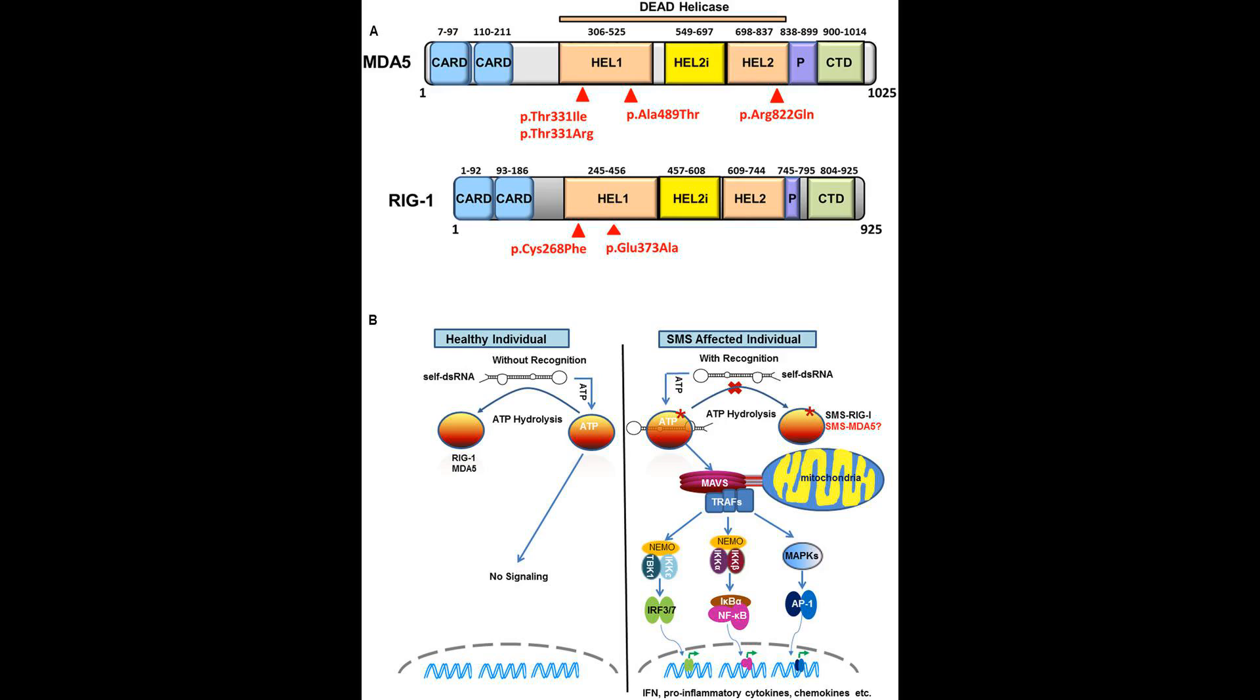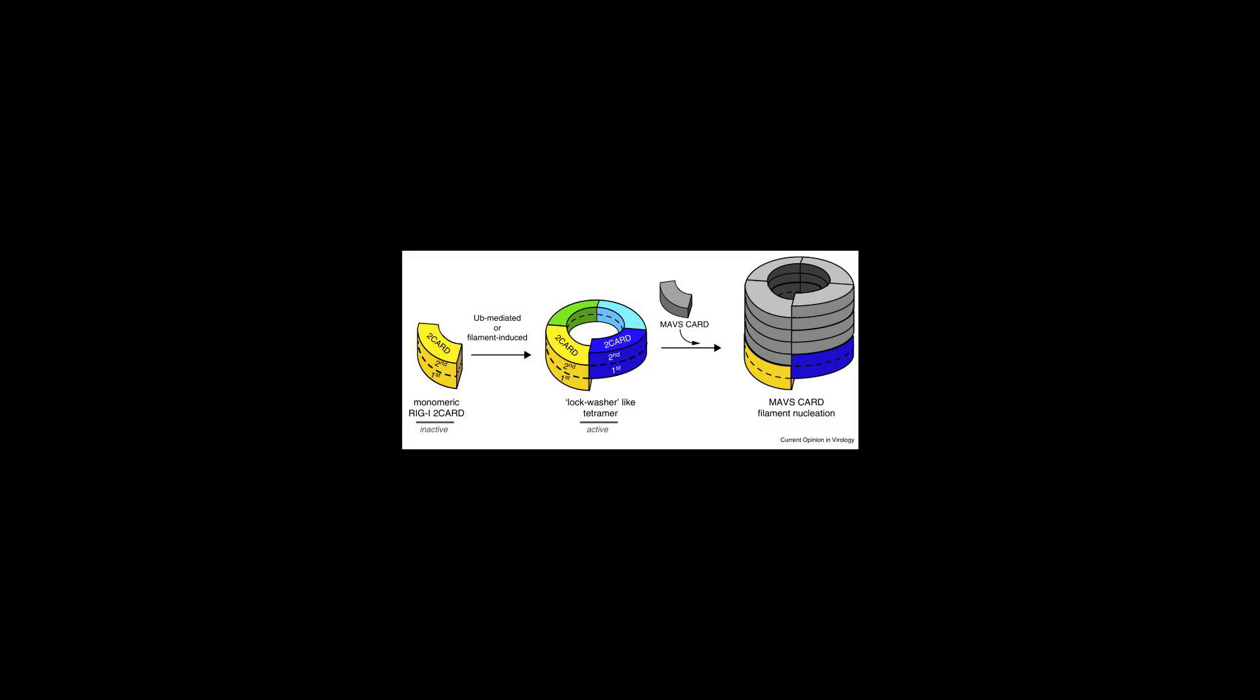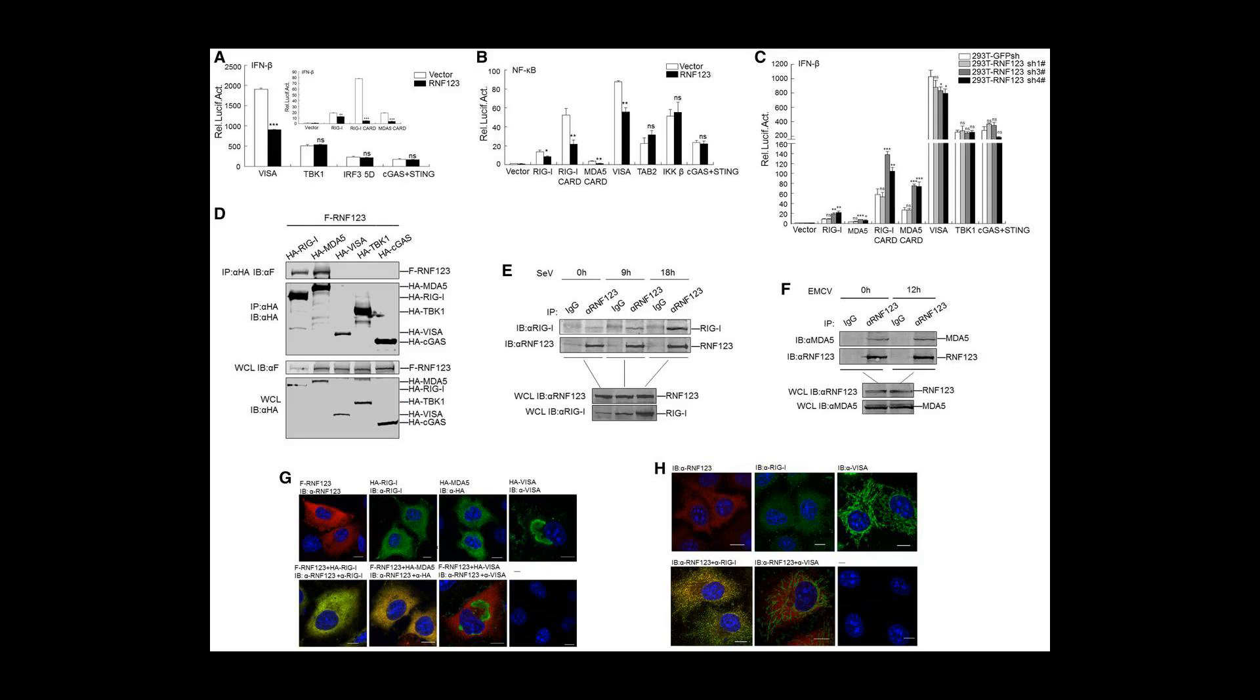Viral proteins have also evolved to counteract and avoid RLR signaling and the ensuing inflammatory response, such as paramyxoviruses, which have V proteins that block RLR signaling through interaction with MDA5.